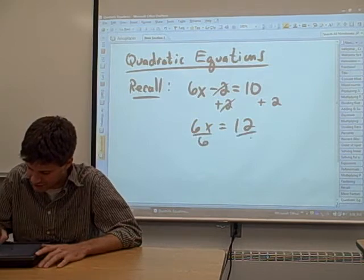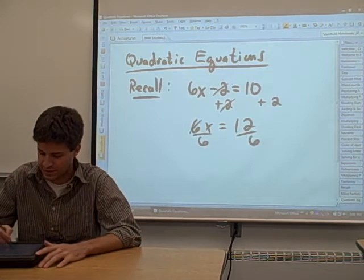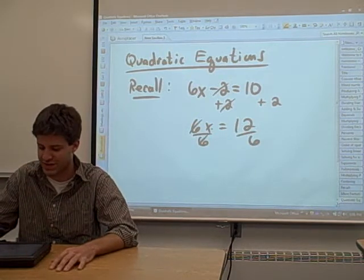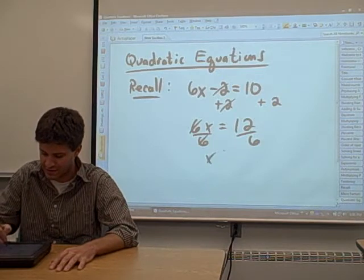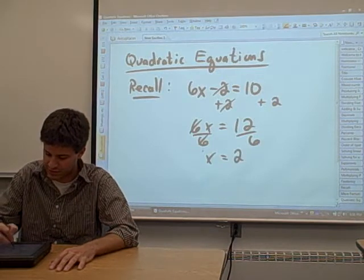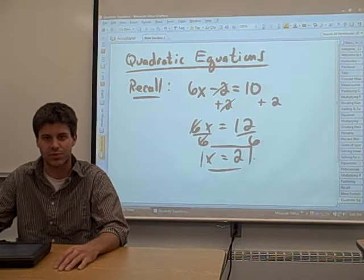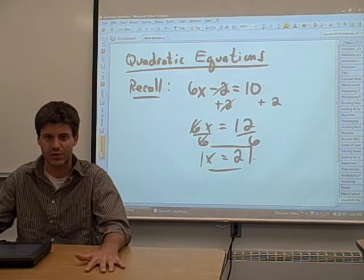To reverse that multiplication, we divide. That's going to cancel our 6s on the left side. On the right side, we're just going to get 12 divided by 6, which equals 2. That was solving a linear equation.